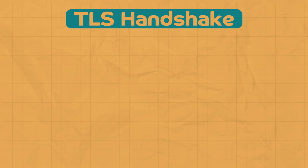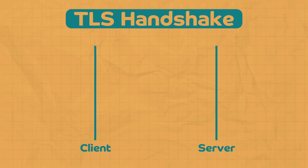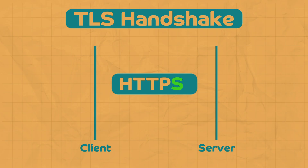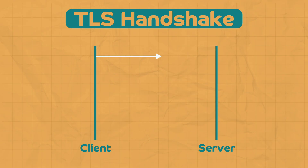Let's go back to our client and server example, but this time they are communicating over HTTPS. When the client and server establish a connection, they first go through a TLS handshake, which establishes a secure connection. The first thing that happens is the client sends the server something called a 'client hello' — a random string of bytes generated by the client.